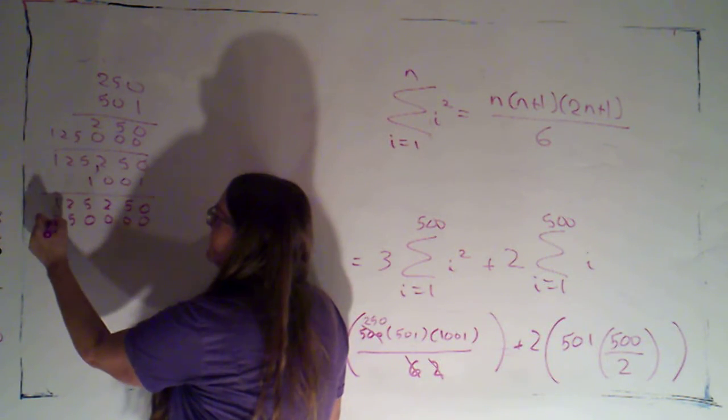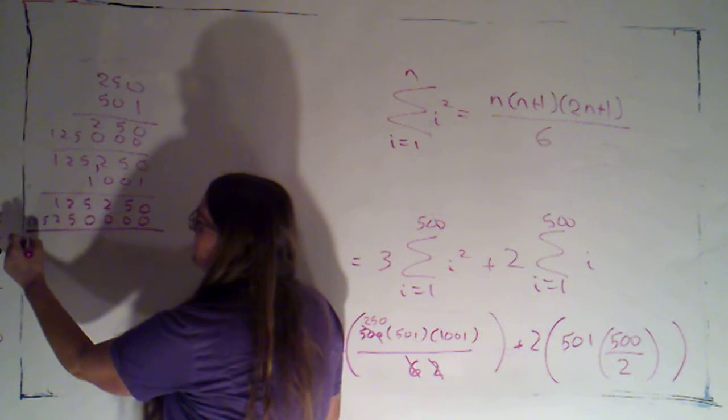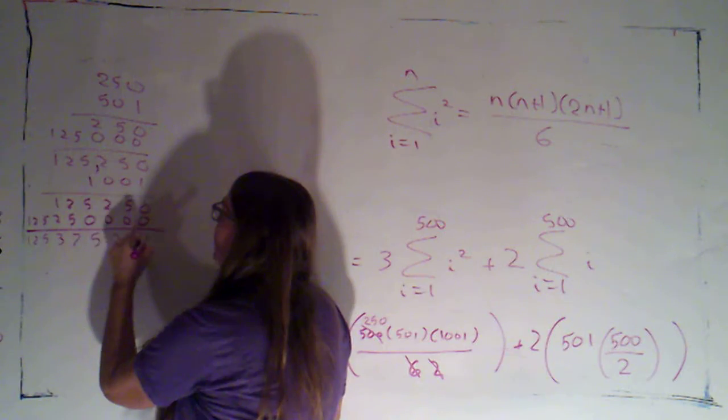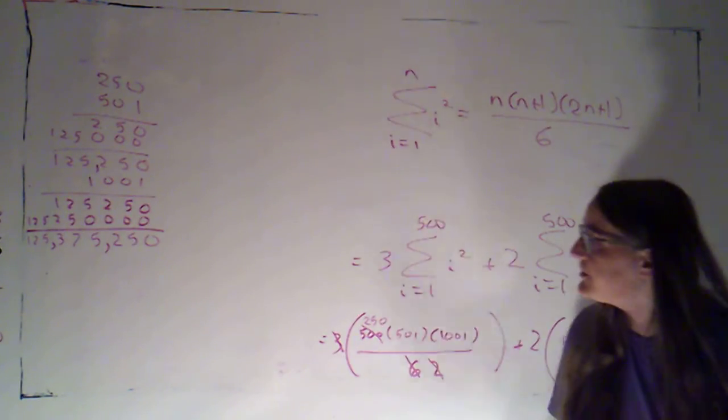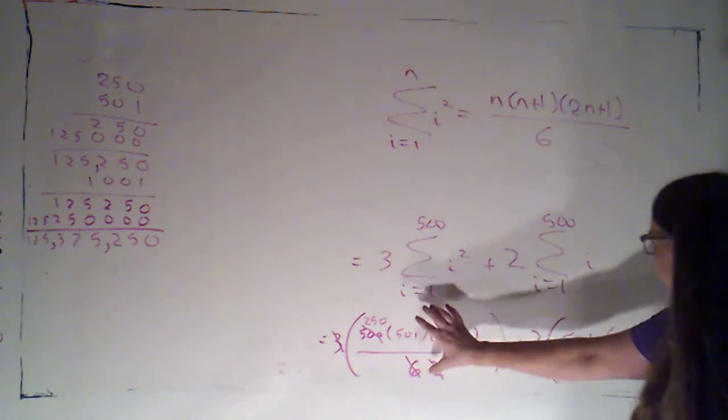Then three place holding zeros and I multiply by one again. So I get those same digits. Zero five two five two one. So we get one two five three seven five two five oh. So a hundred and twenty five million three hundred seventy five thousand two hundred and fifty.